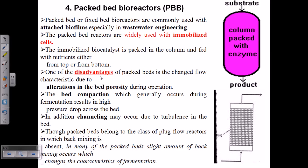Now let us talk about the packed bed bioreactor, the fourth type. The packed bed bioreactor is a little bit different from other types of bioreactors because in this case we commonly use attached biofilms, and it is especially utilized in wastewater engineering. A mat is formed, called a bed, which is made up of a column packed with different materials and enzymes — here the enzyme is not added directly but is provided by microorganisms. We put microorganisms into this bed and they produce a mat.